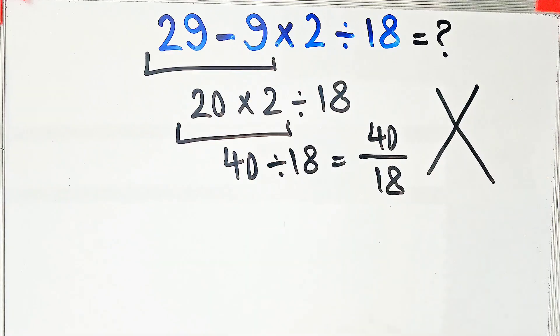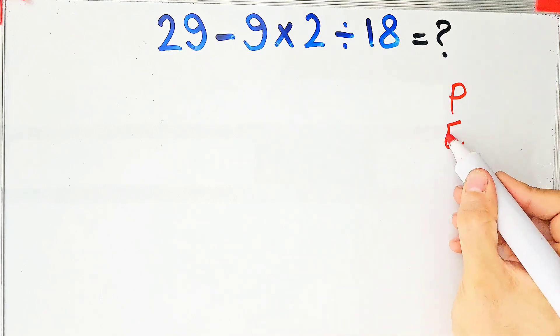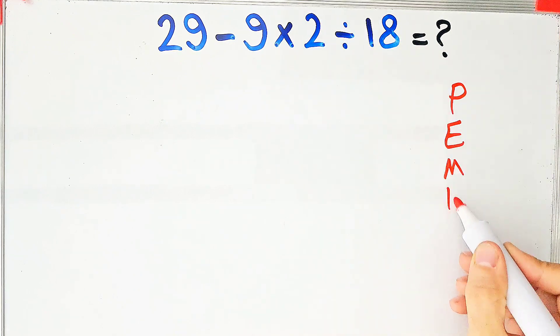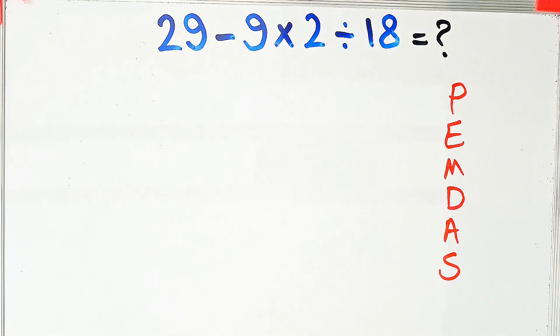Let's solve this question step by step together. To solve this question we need to follow the order of operations which is PEMDAS. PEMDAS shows the priority of the mathematical operations. If you don't pay attention to this rule you get the wrong answer.